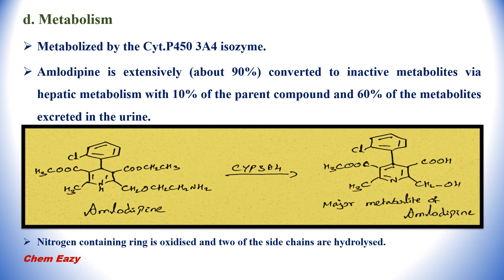Amlodipine is metabolized by CYP3A4 and is extensively metabolized — about 90% of the drug is converted to inactive metabolites via hepatic metabolism, with 10% of the parent compound and 60% of the metabolites excreted in the urine. The major metabolite is formed by oxidation of the 1,4-dihydropyridine ring to a pyridine nucleus, and hydrolysis of the two side chains: the COOCH2CH3 and the CH2OCH2CH2NH2 groups.